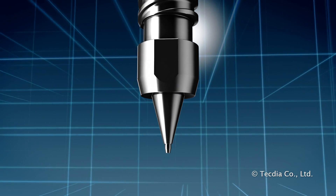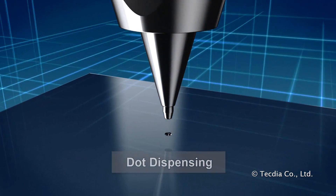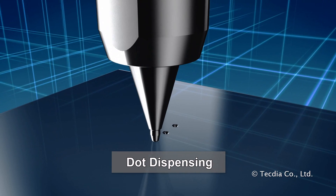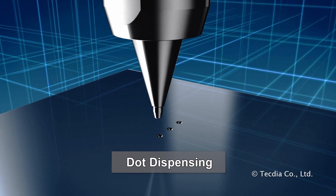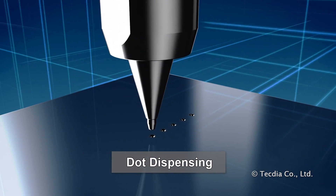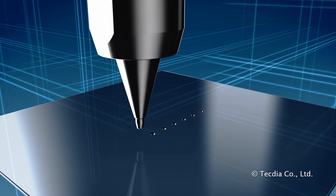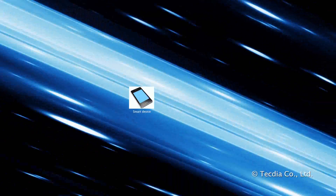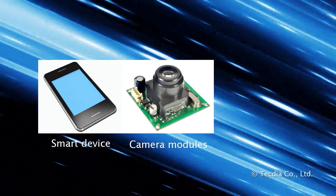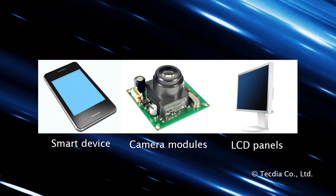Dot dispensing is used to accurately dispense minute droplets of material. As the material is dispensed, tip diameter, applied pressure, and dispensing time control the droplet size. This common method is used in electronic manufacturing for the production of cell phones, camera modules, and LCD panels.